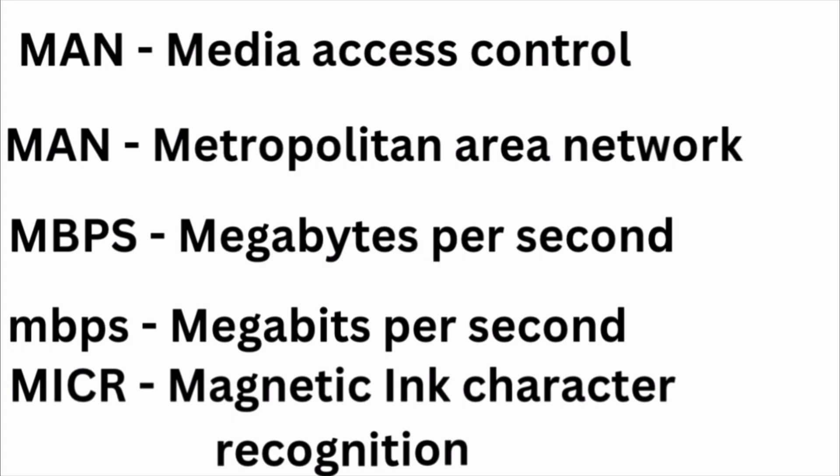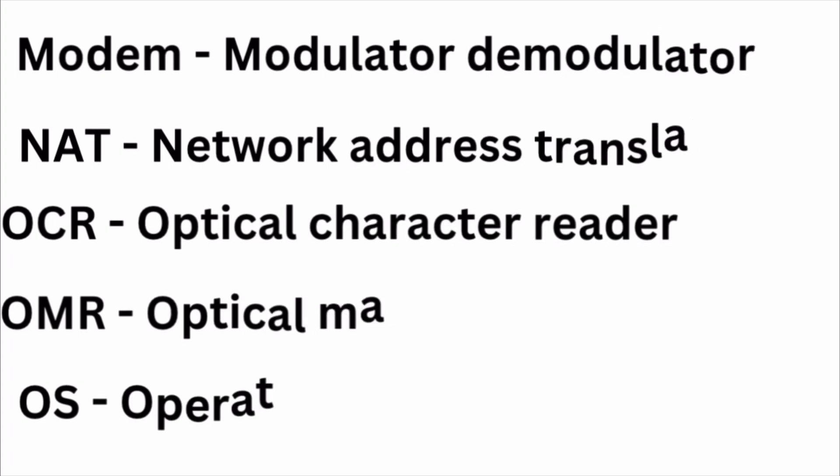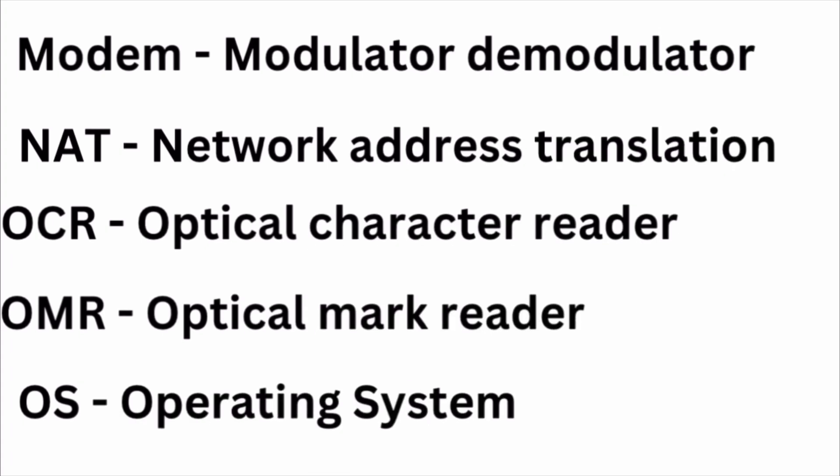Question: in MICR, what does C stand for? C stands for Character. Next: MODEM — full form is Modulator and Demodulator. After that: NAT — full form is Network Address Translation.